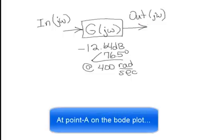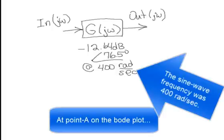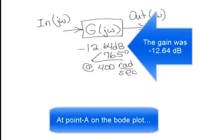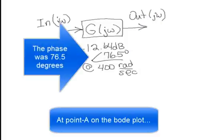At point A on the Bode plot, the sine wave frequency was 400 radians per second. The gain was negative 12.64 dB. The phase was 76.5 degrees.